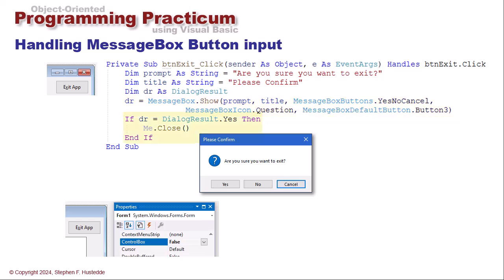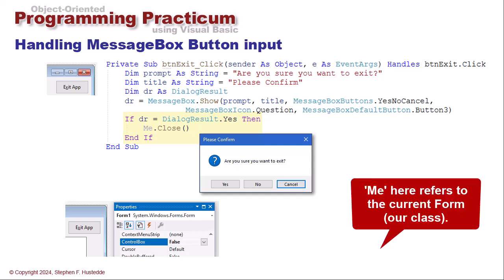If dr is that is equal to dialogue result dot yes, then I'm going to end the application by saying me dot close. That's our command to close the window. This is our only window. It will end the application.